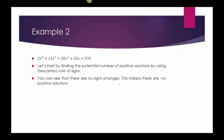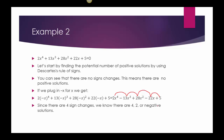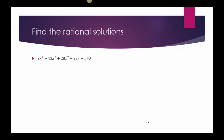No sign changes means I don't have any positive solutions. That helps with rational root — I'm not going to plug any positives into the calculator. For negatives, let's plug in negative x. Using parentheses to keep track of signs, I get 2x to the fourth minus 13x cubed plus 28x squared minus 22x plus 5. Going positive to negative, negative to positive, positive to negative, negative to positive — that's 1, 2, 3, 4 sign changes. So we could have 4, 2, or 0 negative solutions.